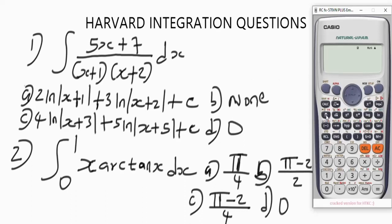Let's evaluate the question. Make use of the fraction button — very important. We have 5x in the numerator, so bring up X using Alpha then X, then plus 7. For the denominator, using brackets we have Alpha X plus 1, close brackets, open brackets, Alpha X plus 2, close brackets. We don't need to include dx. Let's calculate the quotient — we get 17 over 12.